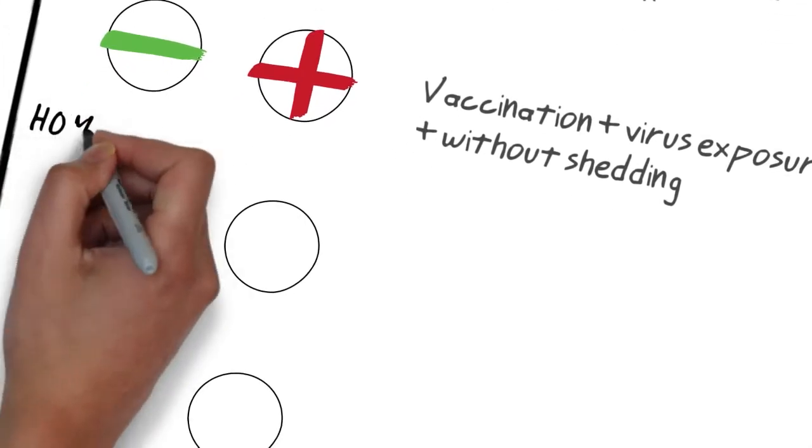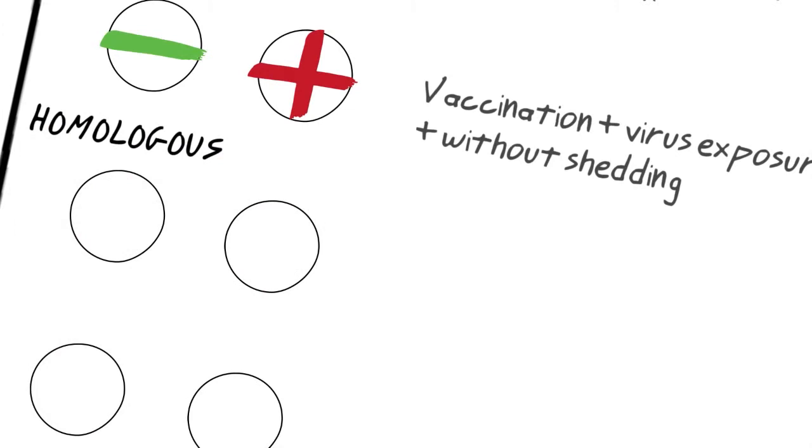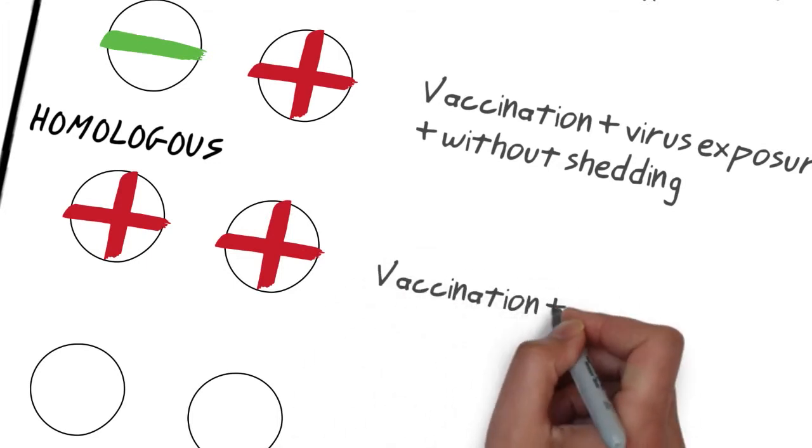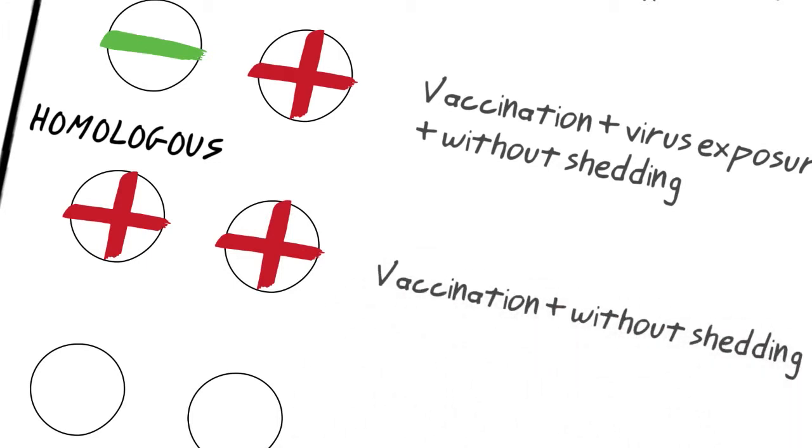If gilts have been in contact with the strain which is circulating in the farm, homologous strain, and so that they are PERS positive, firstly, we have to vaccinate the gilts. Then, prior to introducing animals to the breeding herd, we must ensure that there are no viremic and no excreting animals.